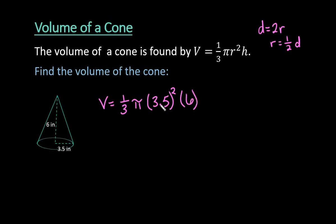If you're doing this by hand, you can always go through and simplify. So 1/3 and 6, that becomes 2. 3.5 squared gives us 12.25. And if we double that, we end up with 24.5π. And remember, because it is volume, we would have inches cubed. So this would be our answer for the volume.